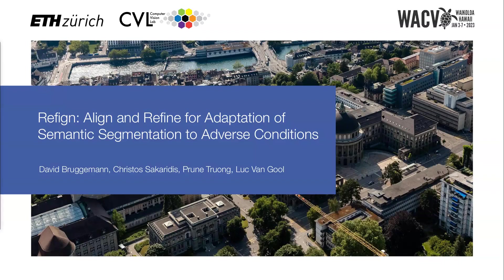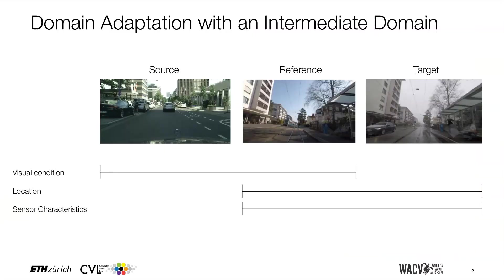Welcome to the presentation of our paper 'Refine, Align, and Refine for Adaptation of Semantic Segmentation to Adverse Conditions.' In this work we examine the domain adaptation of semantic segmentation models from a normal condition dataset, for example Cityscapes, to adverse conditions such as fog, night, rain, and snow. Importantly, in our scenario a reference image is given for each target image, representing an intermediate domain. The reference image captures the same scene albeit under clear weather conditions, overlapping in location and sensor characteristics with the target domain, and in visual condition with the source domain.